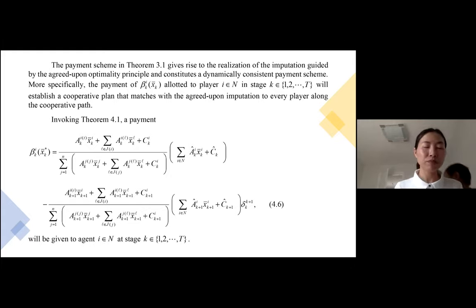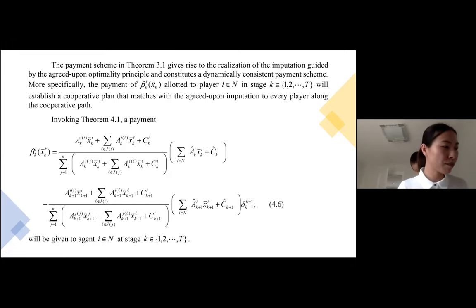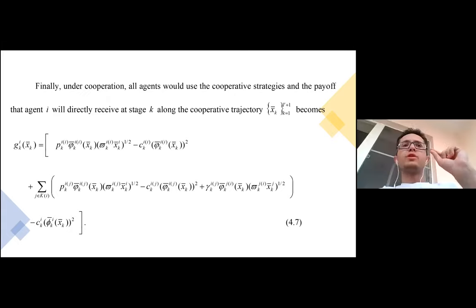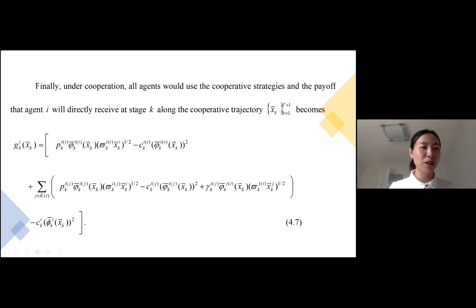Invoking theorem 4.1, attainment beta will be given to agent I belonging to N at stage k, in equation 4.6. Finally, under cooperation, all agents would use the cooperative strategy. The payoff that agent I directly received becomes xi, and equation 4.7 is related to the input investment of the technology.